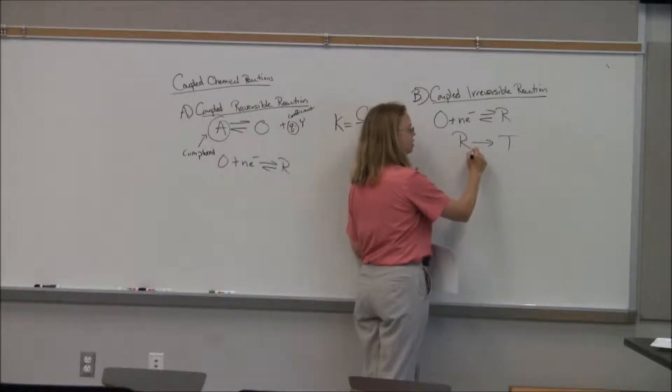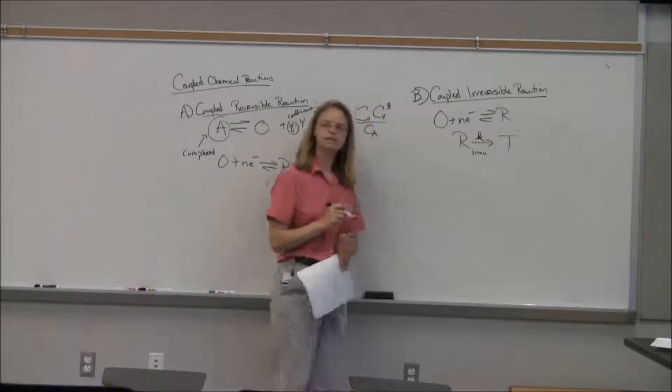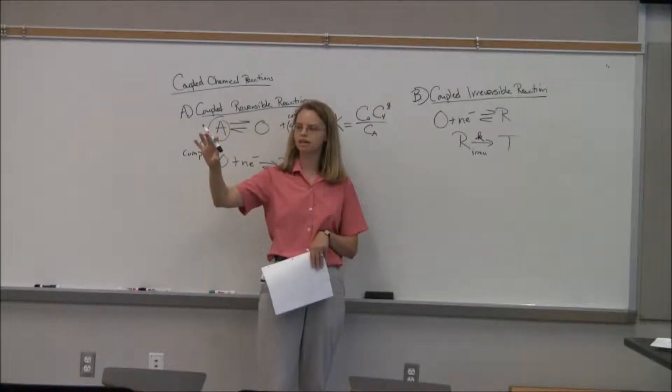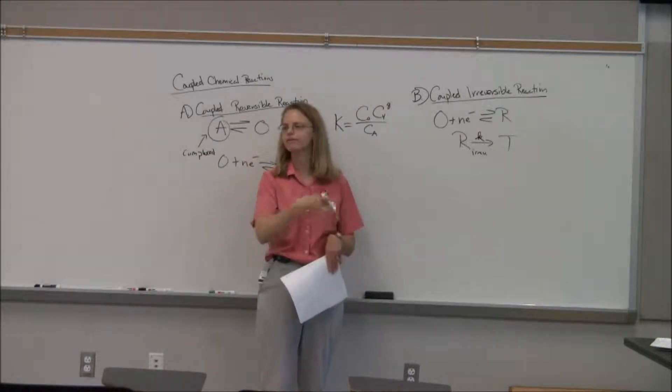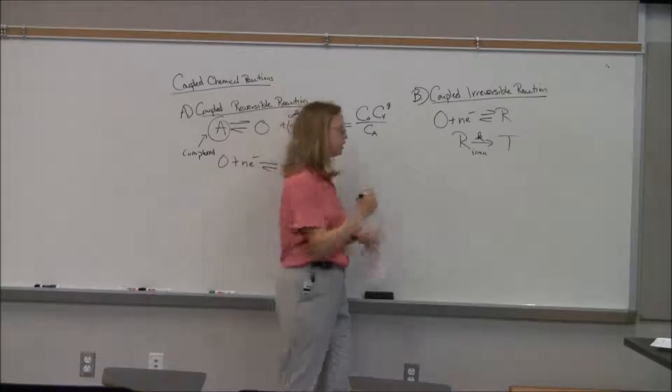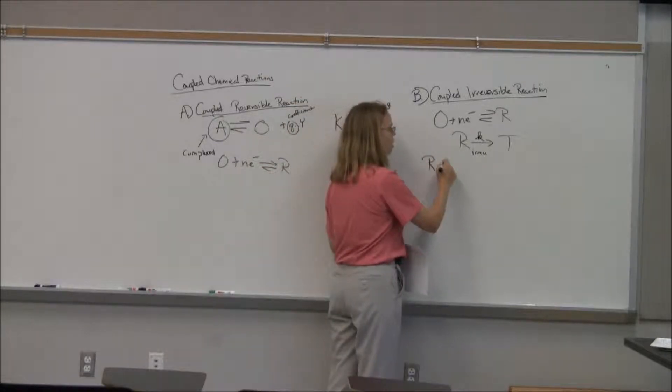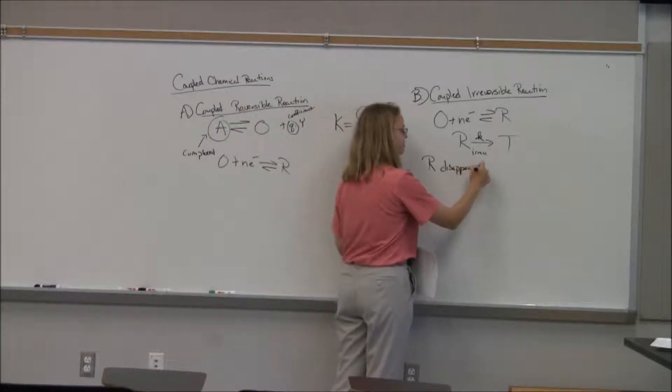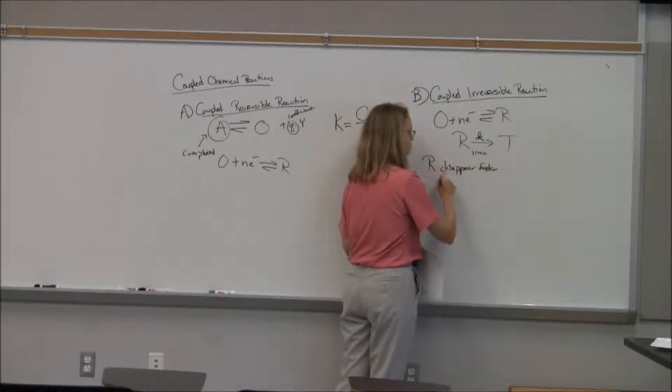Now remember, basically, this part is irreversible. So as we make R, some of it's going to go to T with some sort of rate constant. And so that means not all of R is going to be available to go back to O, even if we wanted it to. Depending on the rate constant, some of it's going to have gone away. You can look at the fact that R, in this case, can disappear faster than just normal diffusion.